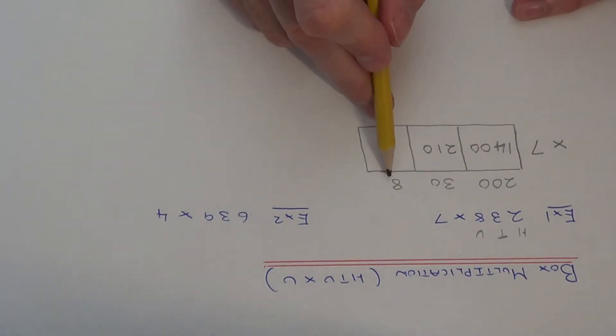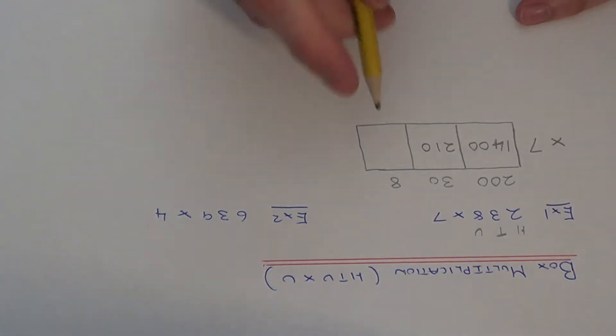And in our final box we've got 8 times 7 which is 56.